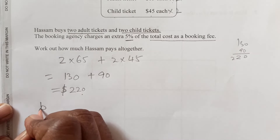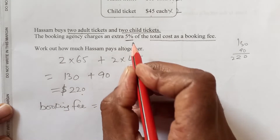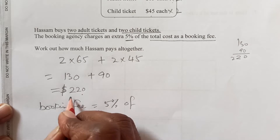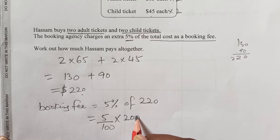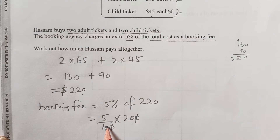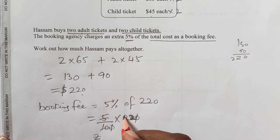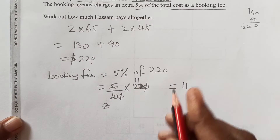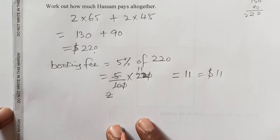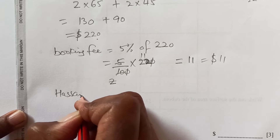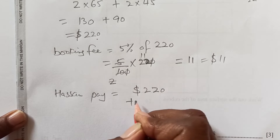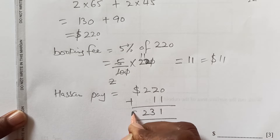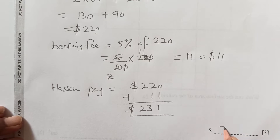Now there is a booking fee. The booking fee is 5% of the total cost, which is $220. So 5 over 100 times 220 gives us $11. So the total booking fee is $11. Hassan pays altogether $220 plus $11, which is $231. So in total he is paying $231.